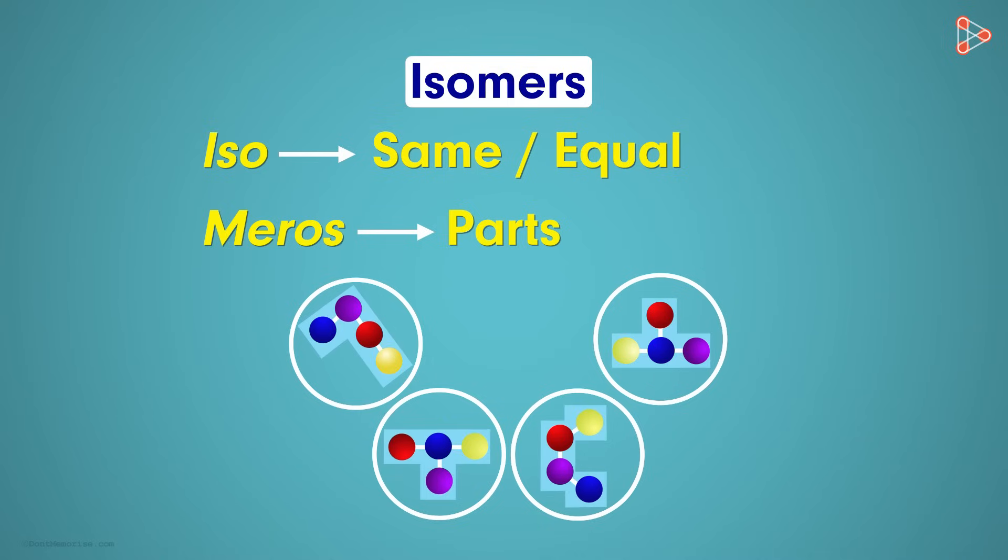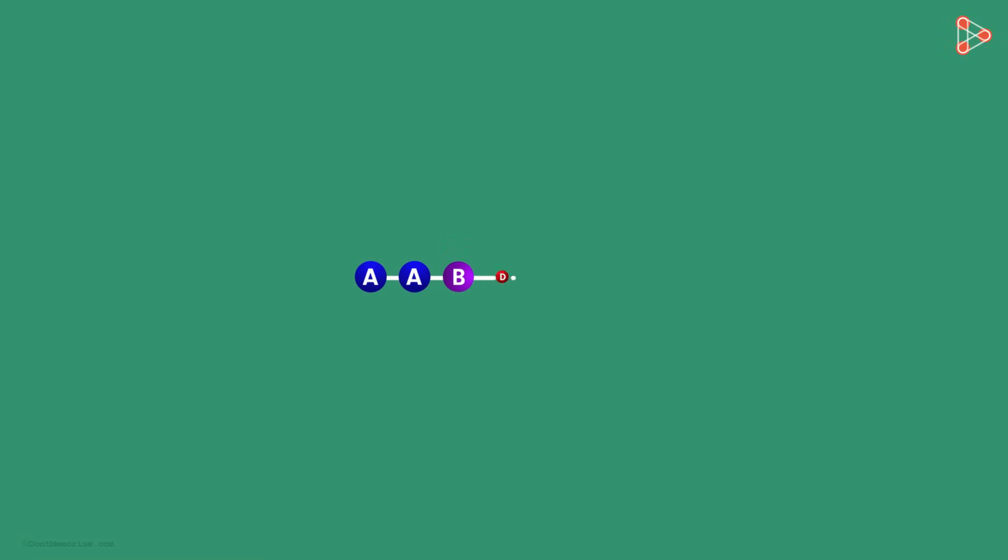However, the arrangement of these atoms is completely different. For the sake of understanding, let us assume we have a compound like this: two atoms of A, one atom each of B and D, and three atoms of C.